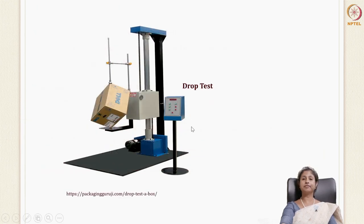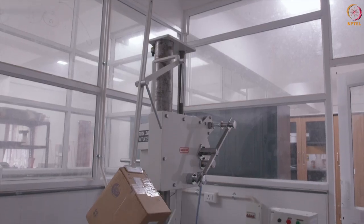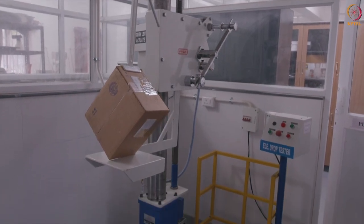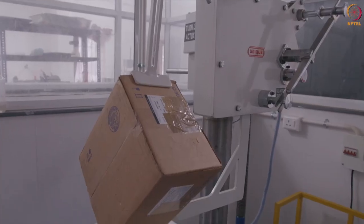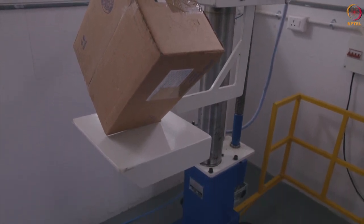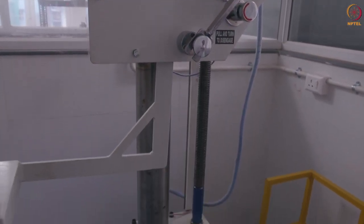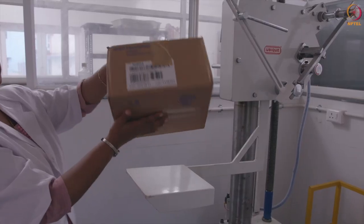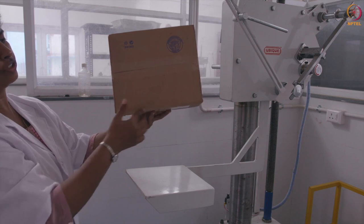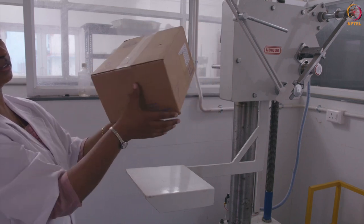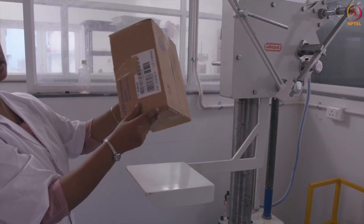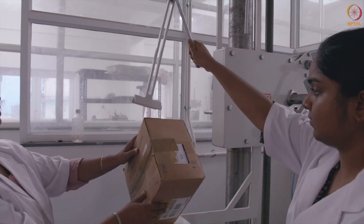Here is a representative diagram and picture of a drop test where you can see the hoist and adjust the height and the floor on which it is dropped. This is the drop tester in our laboratory where we check the ability of packaging containers or corrugated fiber boards to withstand hazards of transportation when accidentally dropped. It is usually done from a height of three feet. The height and sequence of the drop — corner-wise or flat — can be adjusted in the machine.